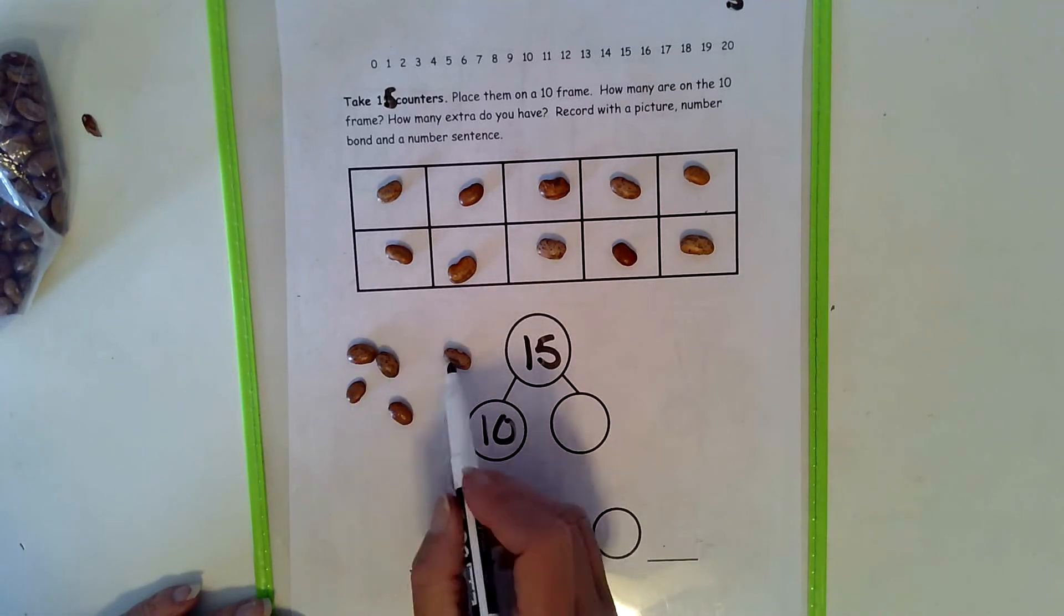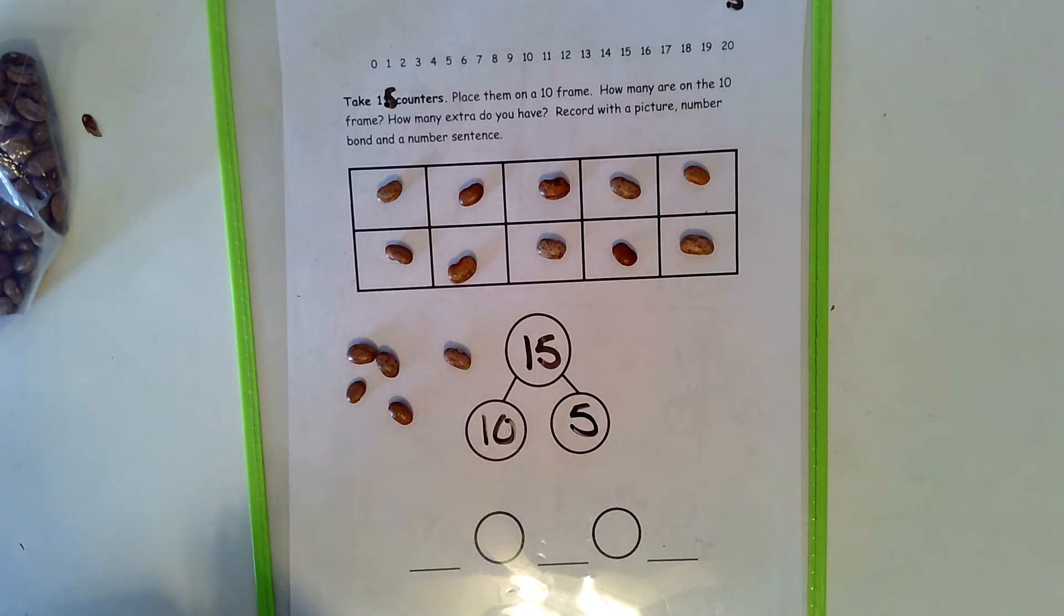And 1, 2, 3, 4, 5 ones. Down here you should write 10 plus 5 equals 15.